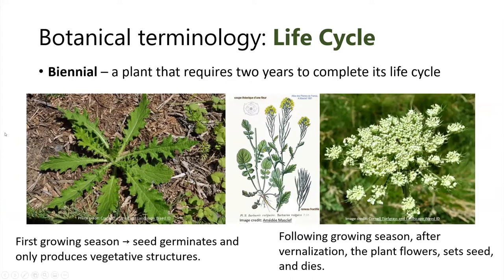The next life cycle is biennials — plants that require two years to complete their life cycle. In the first growing season, the seed germinates and produces only vegetative structures, typically a rosette. This picture shows bull thistle in that rosette stage — a roughly circular grouping of leaves close to the ground. In the following year, after a period of vernalization — meaning a cold period required for flowering — the plant flowers, sets seed, and dies. On the right is wild carrot's flower cluster, or umbel, typical of second-year growth.